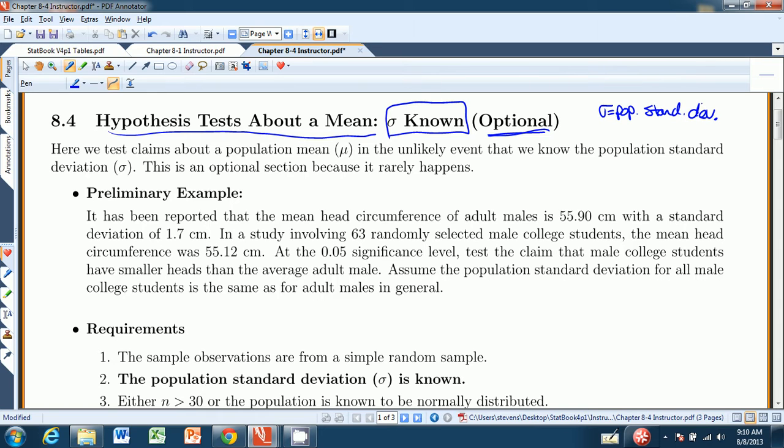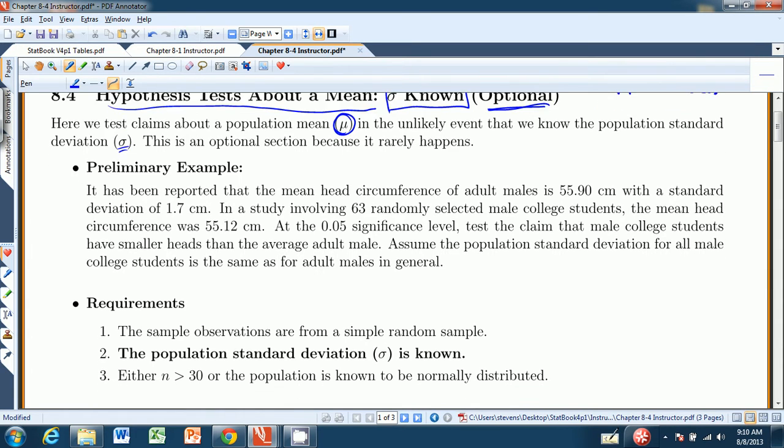But let's continue. In this case we're testing a claim about a population mean mu in the unlikely event that we know the population standard deviation sigma. So here's a preliminary example. It has been reported that the mean head circumference of adult males is 55.90 cm with a standard deviation of 1.7 cm. That's all adult males. In a study involving 63 randomly selected male college students, the mean head circumference was 55.12. At the .05 significance level, test the claim that the male college students have smaller heads than the average adult male. Assume the population standard deviation for all male college students is the same as for adult males in general. So basically we're saying we know sigma and it is 1.7.